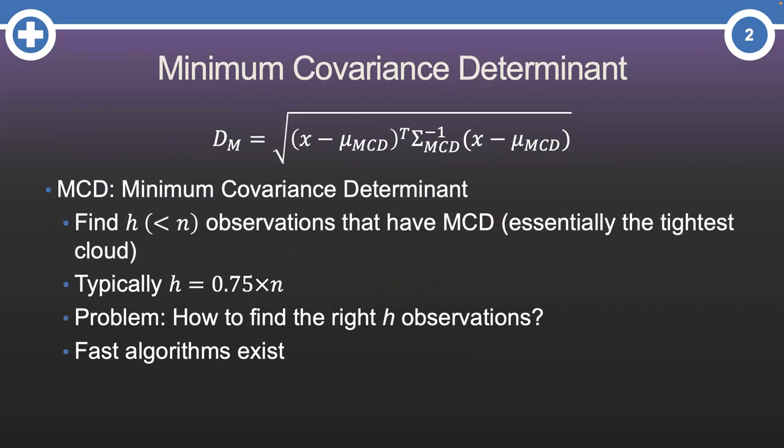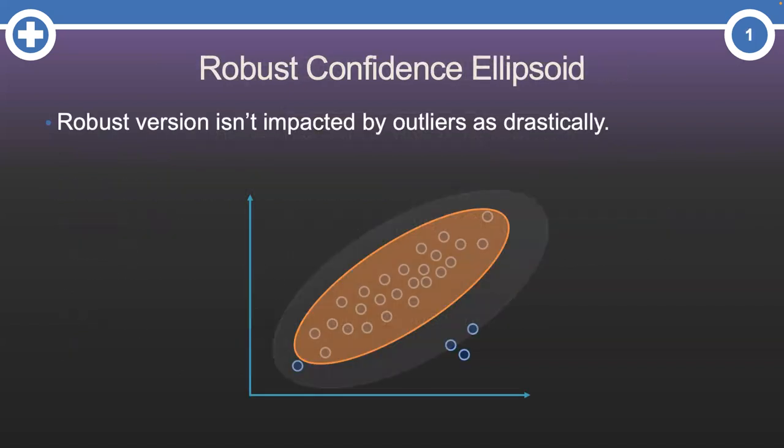Let's see what we get with this new robust version of the Mahalanobis distance. Ah, this confidence ellipse looks a little different. Why? It is calculated based on those tightest observations in the cloud. Now we can easily see we have three outliers in the lower right-hand corner and even maybe another outlier in the lower left-hand corner. Perfect.